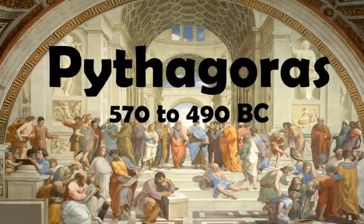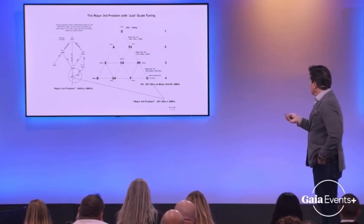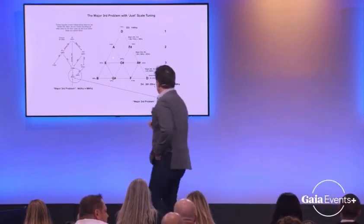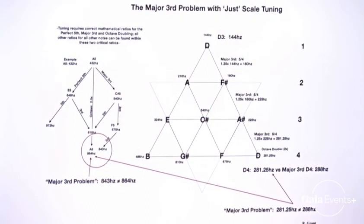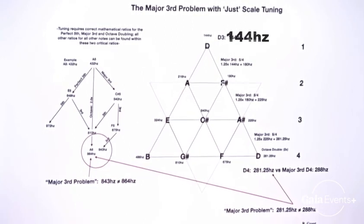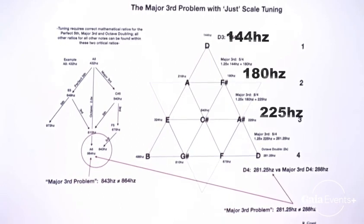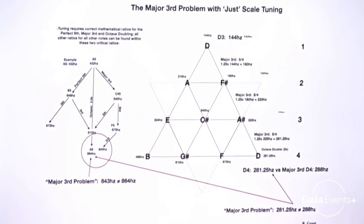Pythagoras taught us this — pretty genius for his age. So when you use just tuning, the reason why it doesn't work so well is as follows. If I start with 144 hertz and use 1.25 as the major third interval — 5 over 4, that's 1.25 — it takes me from 144 hertz to 180 hertz. Then I do it again: 1.25, it becomes 225 hertz. So I'm just multiplying 1.25 times 144, and then 180 times 1.25 gives me 225.